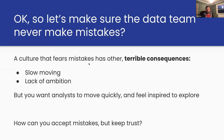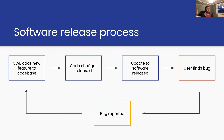So what can we do to accept mistakes, keep trust, but also allow analysts to be free and move quickly? It turns out we can look to software engineers for inspiration. Software engineers have been managing large, complex codebases where mistakes can be really disastrous, and they've found solutions. This is obviously a simplification, but it serves to make the point — here's a standard software engineering process from about ten years ago.